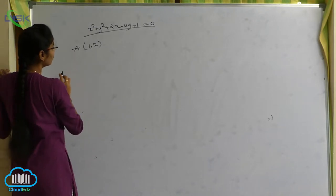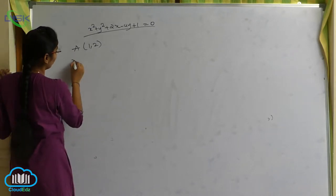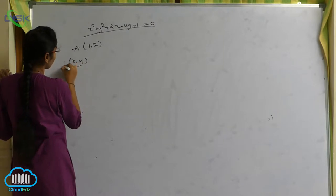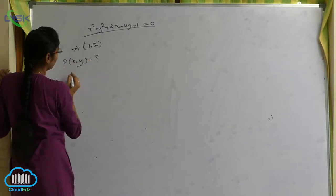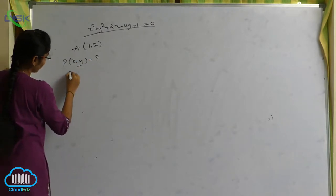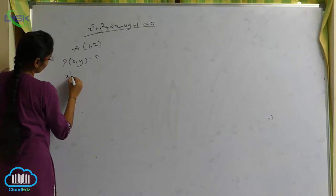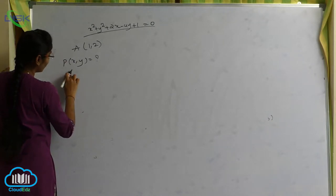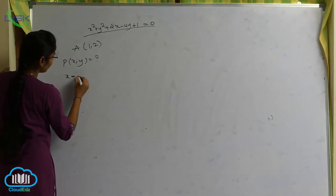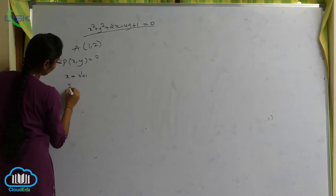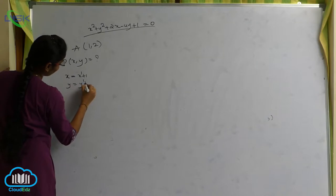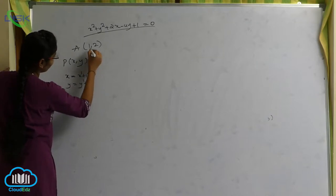Check the xy values: P of xy equals to — so x dash is equals to x, where x equals x dash plus 1, and y equals y dash plus 2.